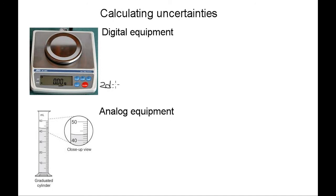This mass balance measures to two decimal places. So if you record a mass, for example two grams, you would write 2.00 plus or minus 0.01 grams. That's because it's measured to two decimal places, and that's for digital equipment.